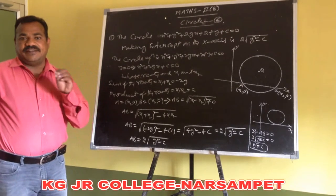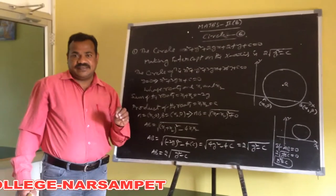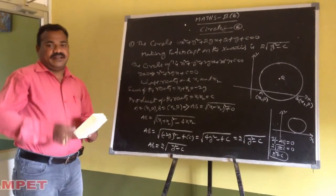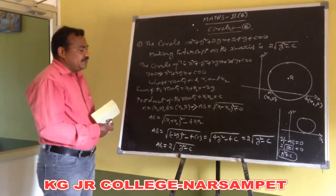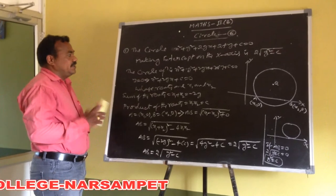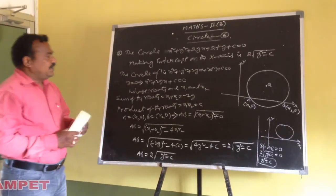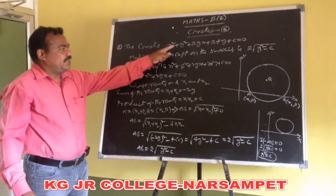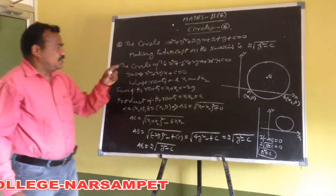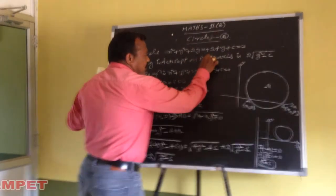Next we are going to explain another concept — the second concept. The circle x square plus y square plus 2gx plus 2fy plus c is equal to 0, making intercept on the y-axis, is 2 into root of f square minus c.